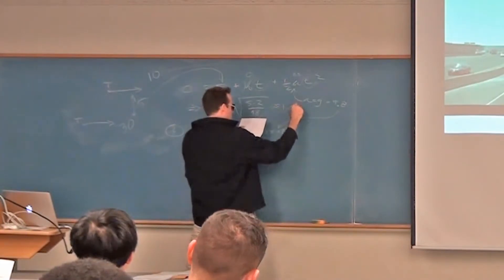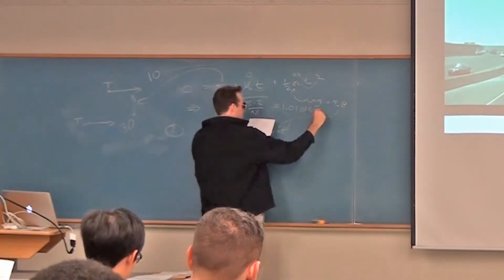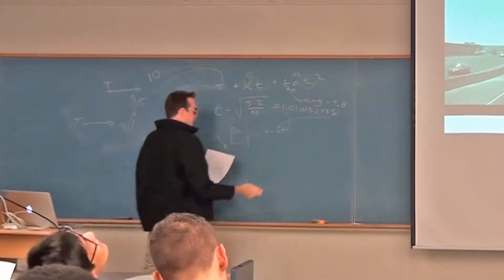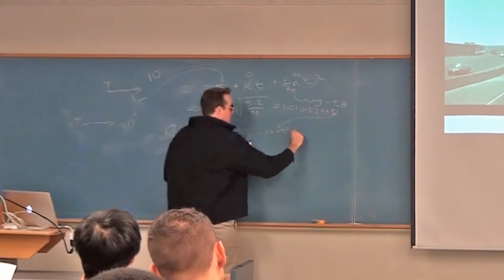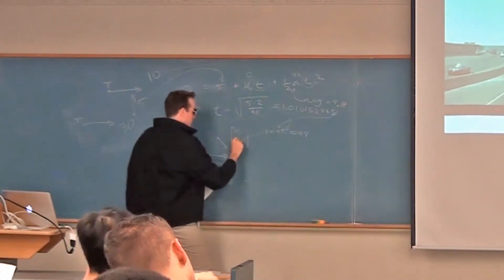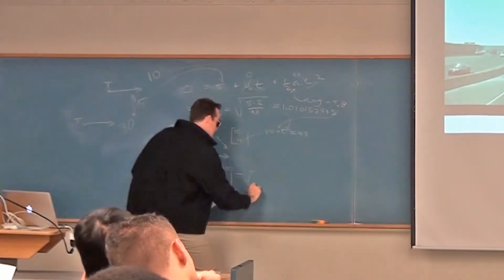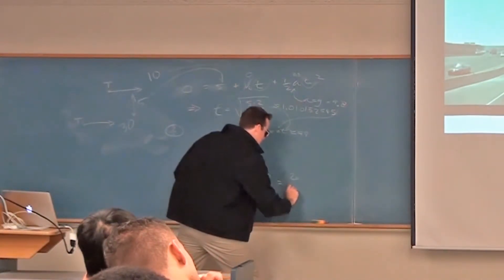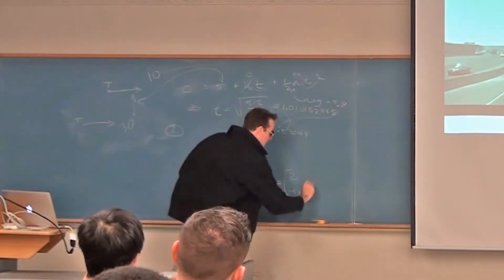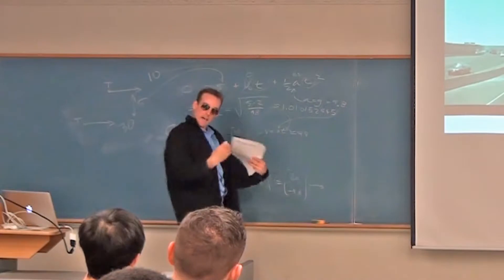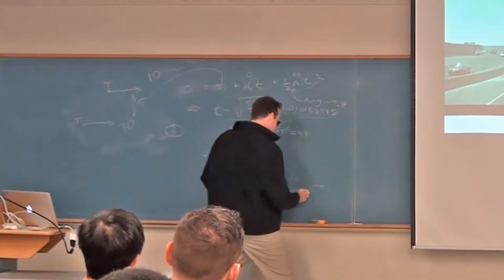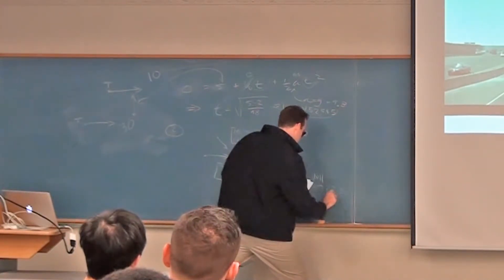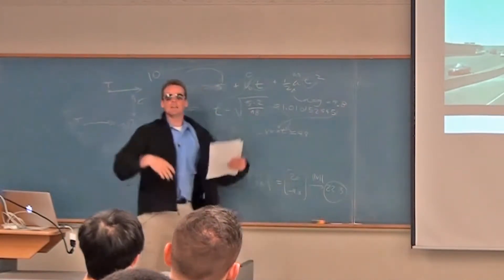I calculated this for you: t is 1.010152545. This is going to be on the midterm. So you plug these things in: the vertical velocity is about 9.8. You subtract — horizontal is 10, vertical is about 9.8 — so you get 20 and minus 9.8. You do vectors because you want the absolute magnitude of the speed.